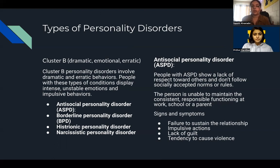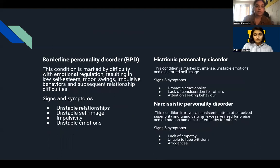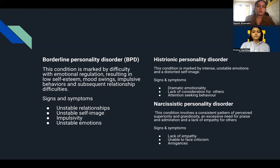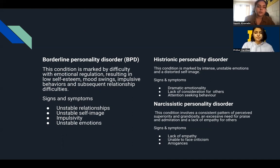People with Antisocial Personality Disorder often show a lack of respect toward others and don't follow socially accepted norms and rules. The person is also unable to maintain consistent responsible functioning at work, in school, or as a parent. Next is Borderline Personality Disorder, marked by difficulty with emotional regulation resulting in low self-esteem, mood swings, impulsive behaviors, and relationship difficulties.